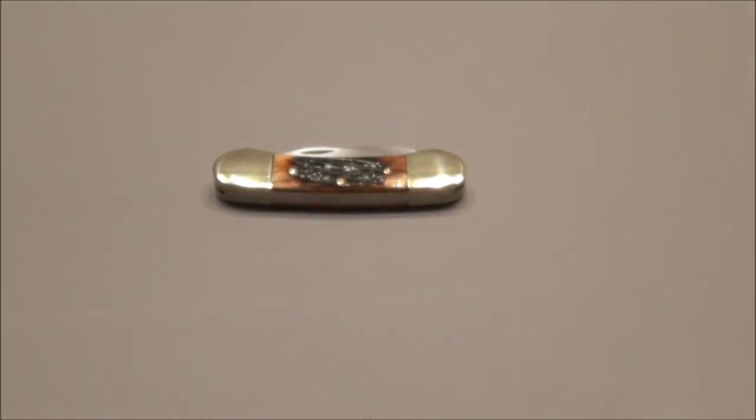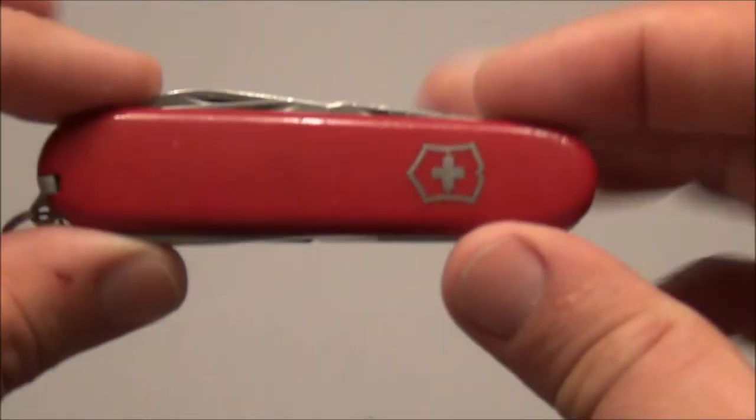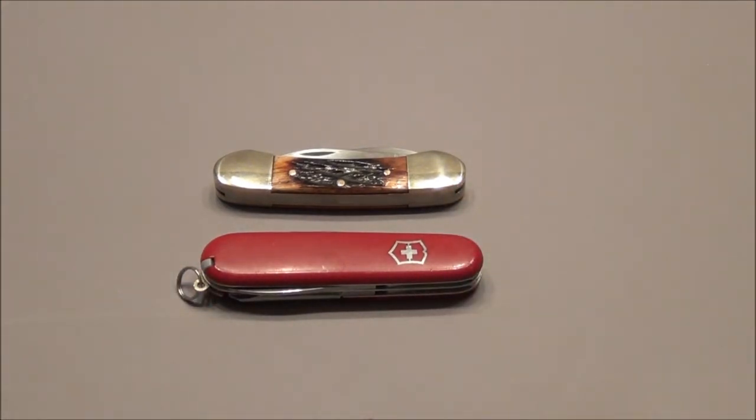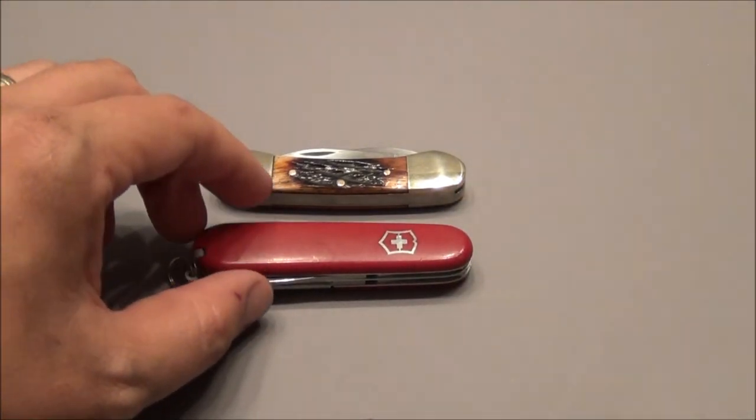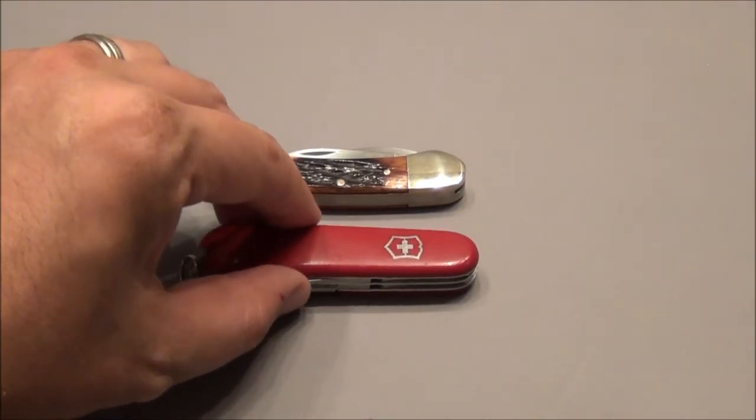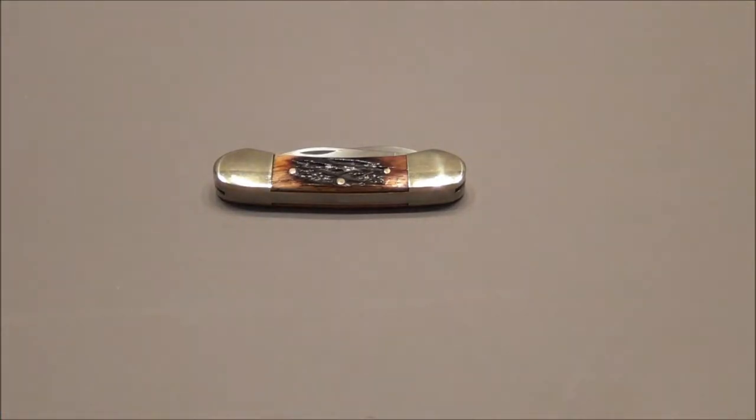This is the Victorinox tinker and you can see that it's roughly the same size as that. It's a little bit shorter, not much. It really is almost the same size and it's a little bit thinner than the tinker as well.